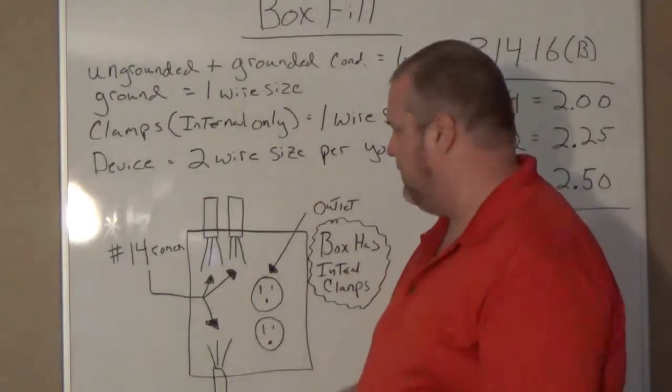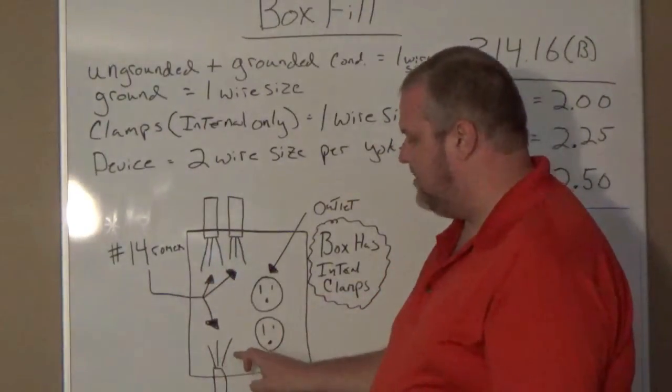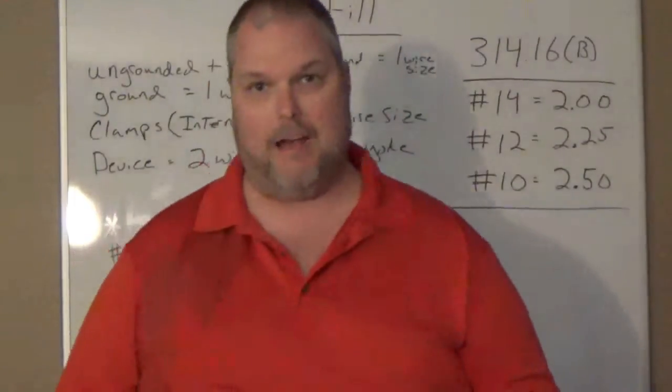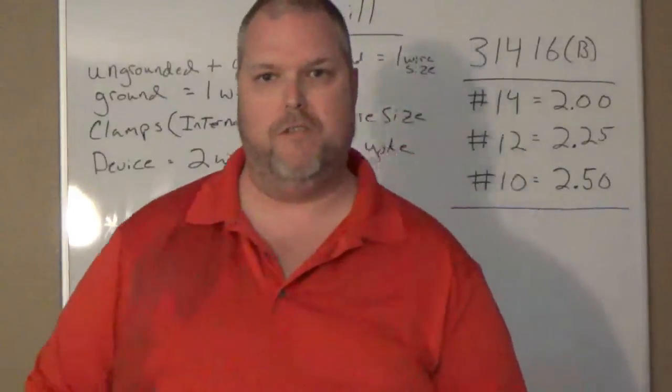So let's look at it this way. One, two, three, four, five, six. That means this box has six current carrying conductors in it. What do we do next?